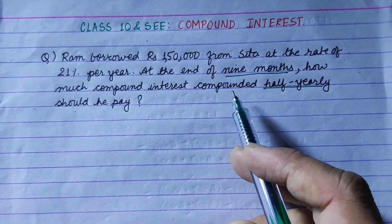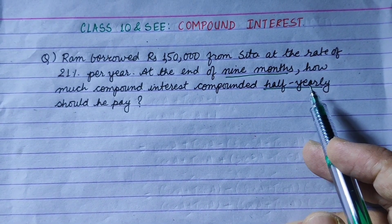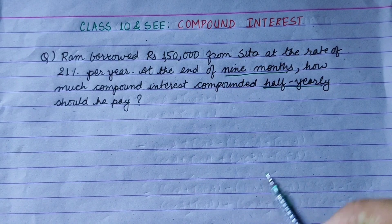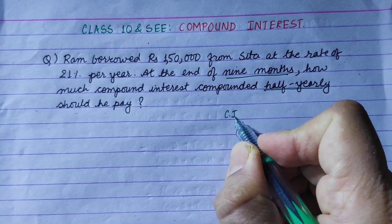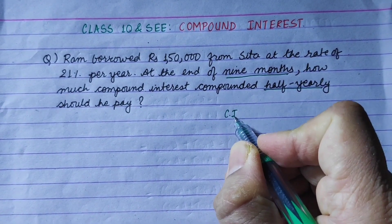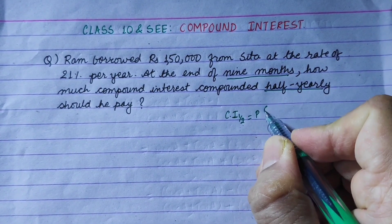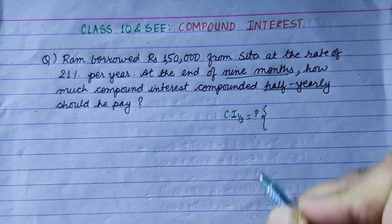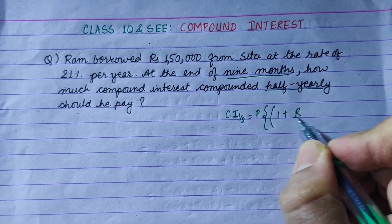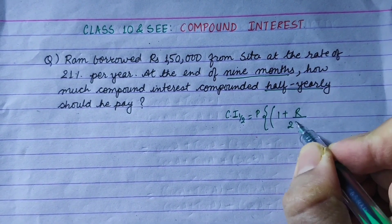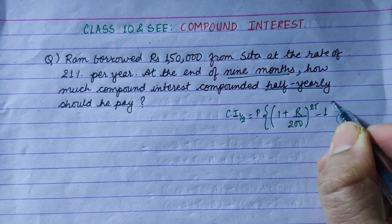Now, normally the compound interest half-yearly formula is: CI = P × [(1 + r/200)^(2t) − 1], where P is principal, r is rate, and t is time in years.